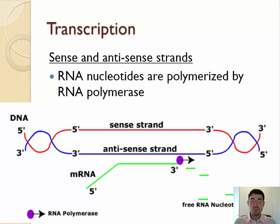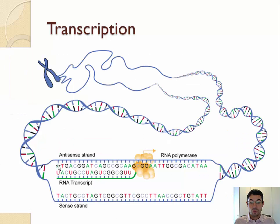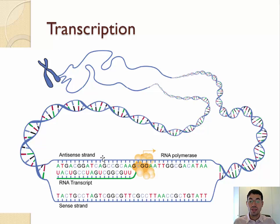Here we can see that as an image, where we have the sense strand, the antisense strand, and here we have the mRNA being built in the 5' to 3' direction. That means it's the opposite direction for the antisense strand, but the mRNA and the sense strand are going in the same direction and will basically have the same sequence. We can actually see that here — the sense strand and the RNA are the same except for the T's and U's being different. Both the sense strand and the mRNA are complementary to the antisense strand, and here we have RNA polymerase adding new nucleotides that are complementary to the antisense strand.